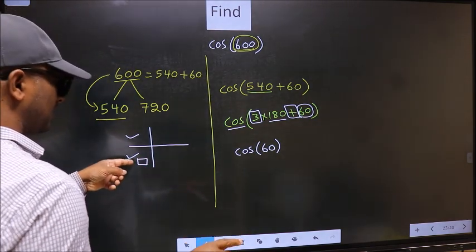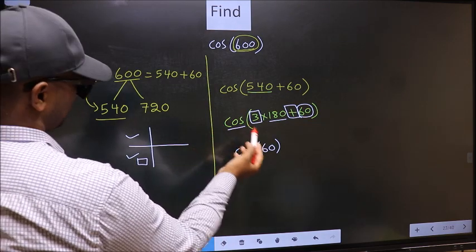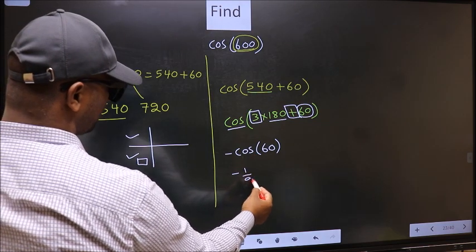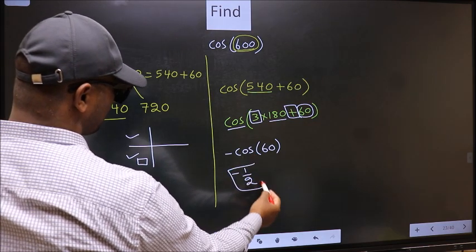And in the third quadrant, cos is negative. So, we should put negative. So, negative cos 60 is 1 by 2. This is our answer.